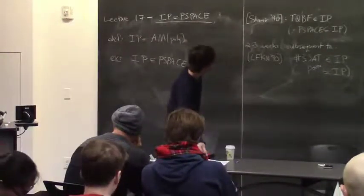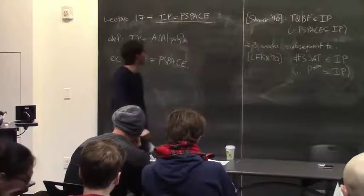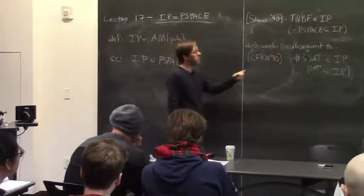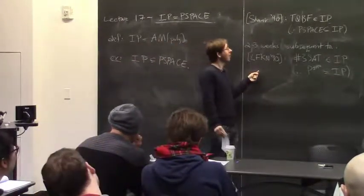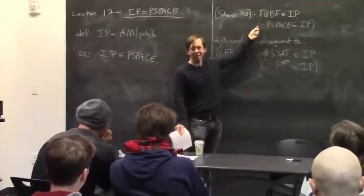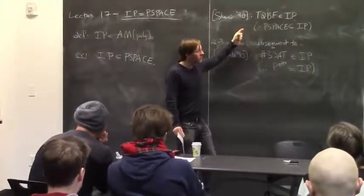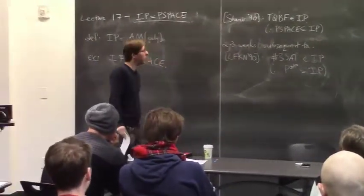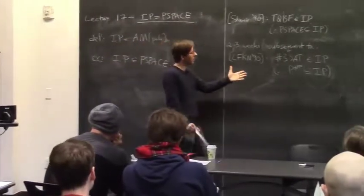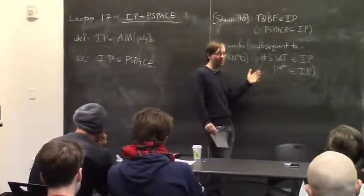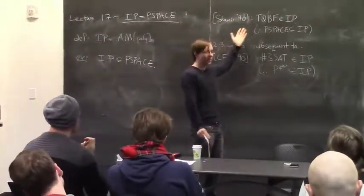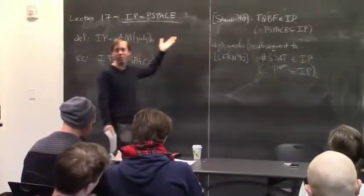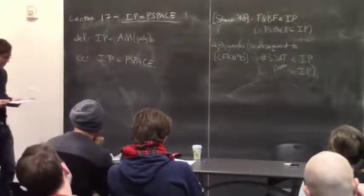As is traditional when dealing with IP equals PSPACE, we're going to first prove that SharpSAT has interactive proofs, and then attempt to prove PSPACE ⊆ IP. I always find the latter proof quite painful and annoying, while this first part captures most of the ideas and utility. This is really an important proof to know.